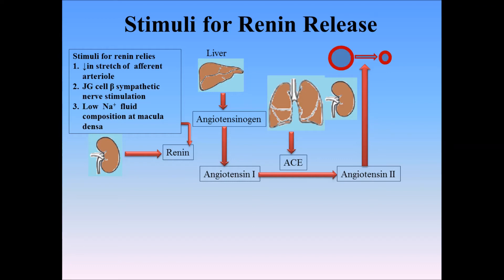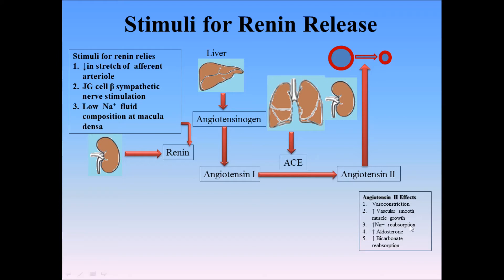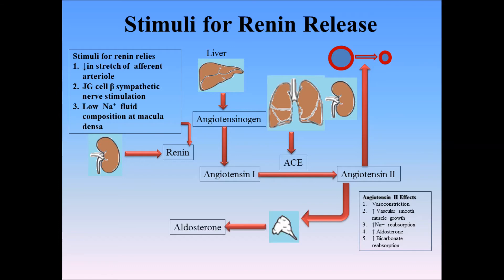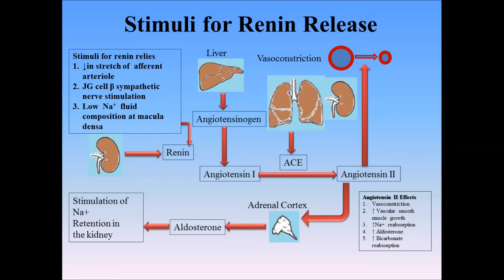Angiotensin II has a wide range of effects including vasoconstriction, increasing vascular smooth muscle growth, increasing sodium reabsorption, increasing aldosterone secretion from the outer layer of the adrenal cortex, and finally increasing bicarbonate reabsorption. As you can see here, aldosterone enhances sodium retention in the kidneys.